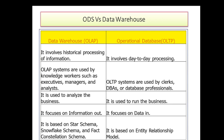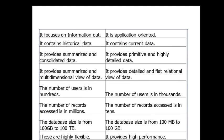OLAP is majorly based on star schema, snowflake schema, or fact constellation schema — we'll discuss all these in upcoming sessions. Whereas OLTP uses the Entity Relationship model and ER diagrams. From a database size standpoint, OLAP involves a very large database whereas OLTP is smaller in size. The data accessed in OLAP is huge whereas in OLTP it is much less.